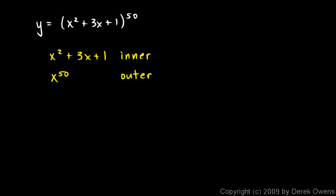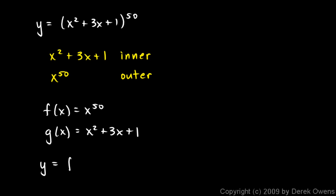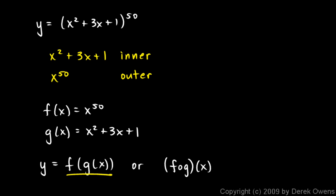In the notation of composite functions, which you typically cover in Algebra 2 or Precalculus, you would say: f of x equals x to the power of 50, and g of x equals x squared plus 3x plus 1. Then y can be written as f of g of x. There's another notation: f compose g of x, written with a small open circle indicating function composition. The notation f of g of x is a bit more clear because it shows g literally inside function f — which is what we have: function g inside function f, which is x to the 50th. This is a composite function, and the chain rule is a technique for taking derivatives that applies to composite functions.